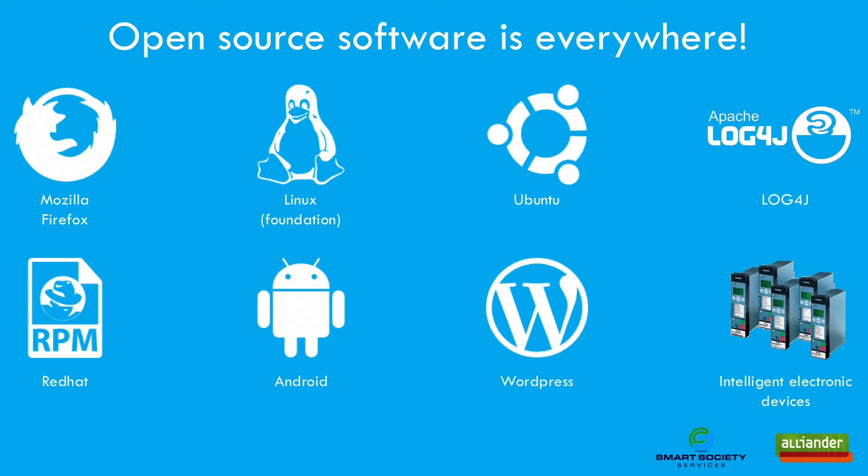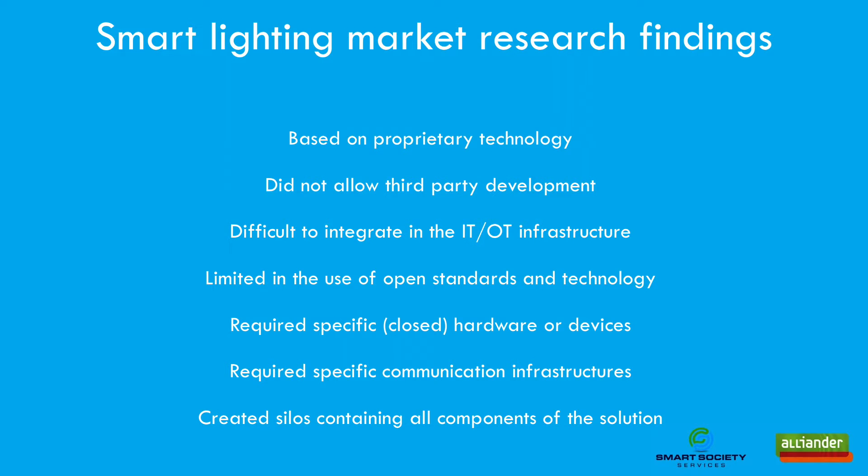Let's move on to one of our major open-source projects, the OpenSmart Grid Platform. A few years ago, Alliander did market research on smart lighting solutions and found that the products available at the time were mostly based on proprietary technology, did not allow third-party development, were difficult to integrate in the IT-OT infrastructure, were limited in the use of open standards and technology, required specific closed hardware or devices, required specific communication infrastructures, and created silos containing all components of the solution. That situation was the trigger to choose a different approach.